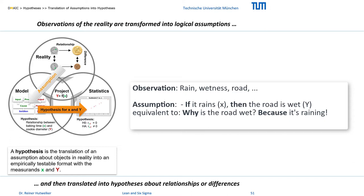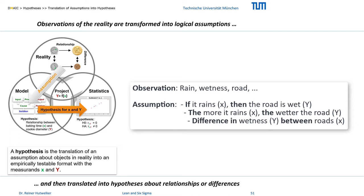Logically, however, both statements are identical. A more precise formulation of the categorical statement 'if X then Y' is the assumption: the more it rains (X), the wetter the road (Y), with a continuous relationship between X and Y. And in a final statement we can formulate: Y differs between the states of X.